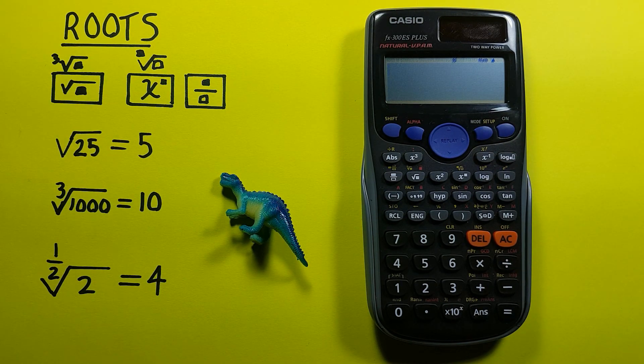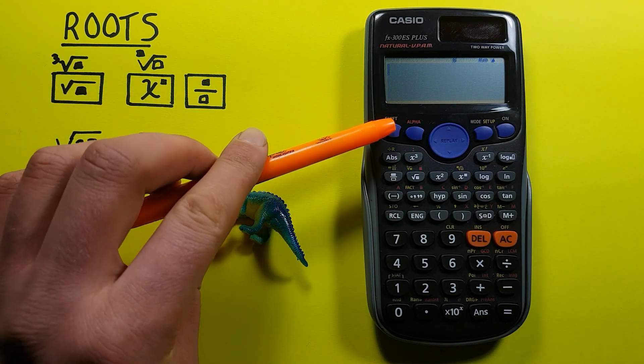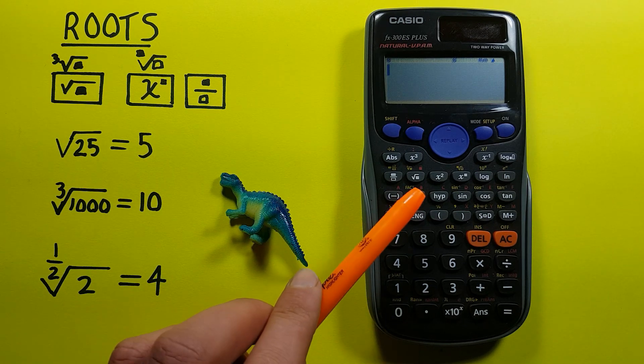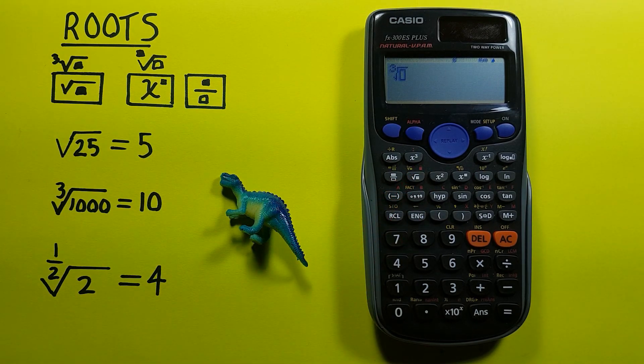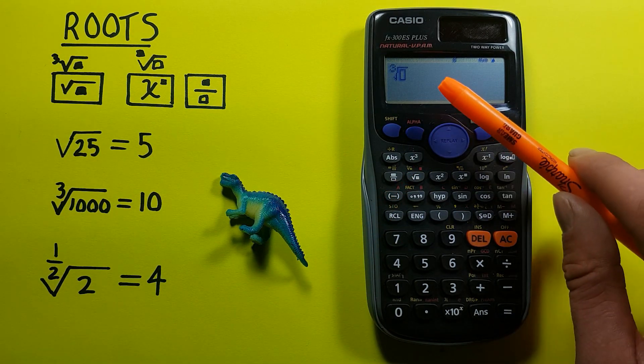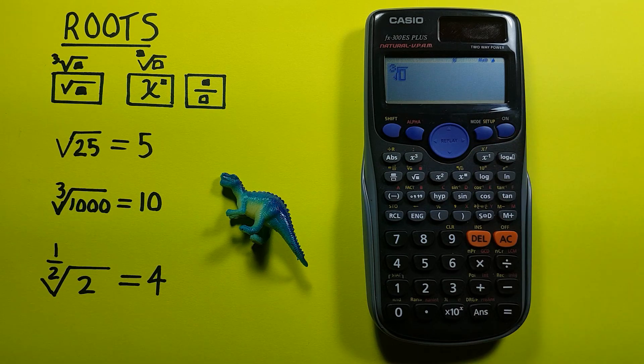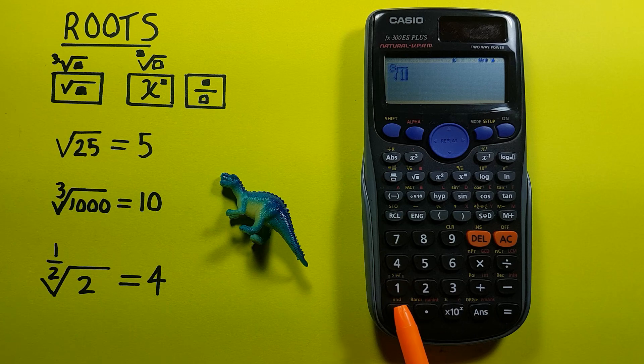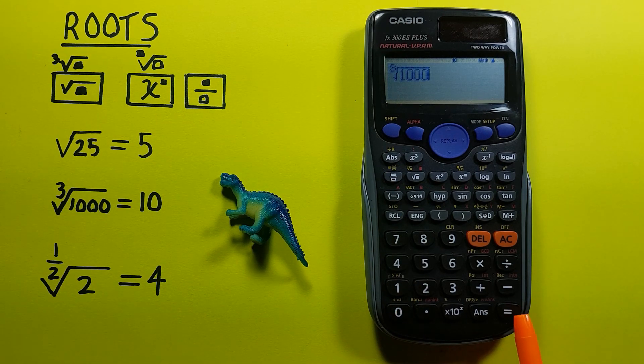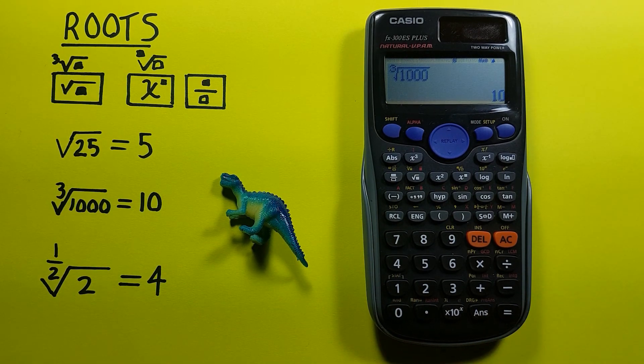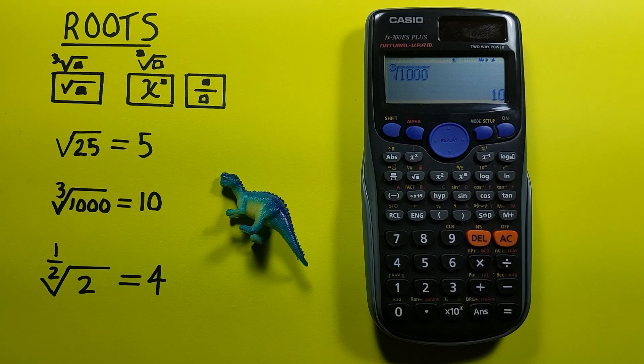If we want to cube root a number, use the shift function of that key. So we press shift and then the square root key. You can see there's now a 3 in the root spot right there. So if we wanted to get the cube root of 1000, we then enter 1000 and press equals and get the cube root of 1000 is equal to 10.